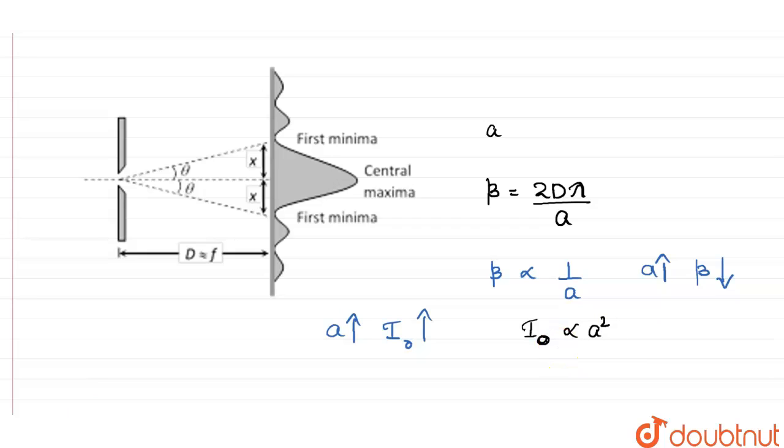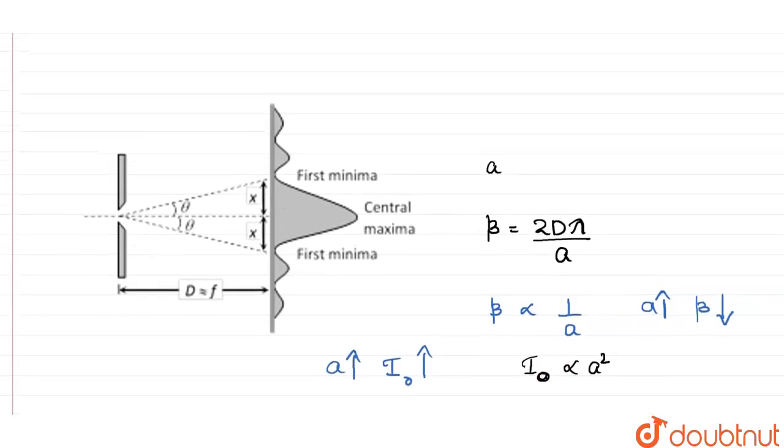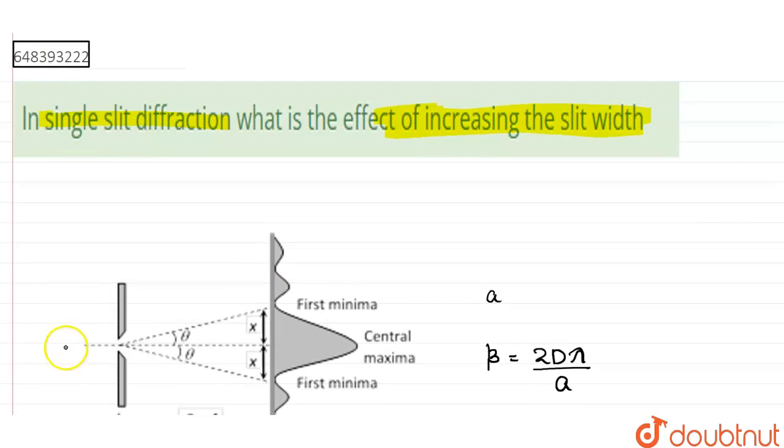So the width of the central maximum will decrease and the intensity will increase. Thank you.